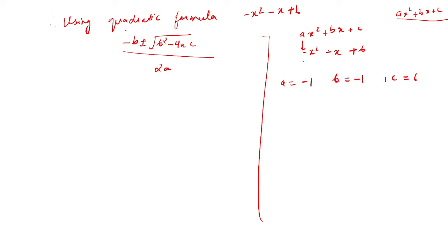If you ever get confused, try to write the given equation in the form ax squared plus bx plus c. When you write the plus sign, automatically the minus cannot be removed — you are bound to put a plus over there. So now it looks like ax squared plus bx plus c. This is a, b, and c's value.